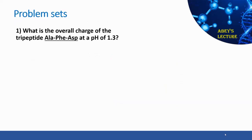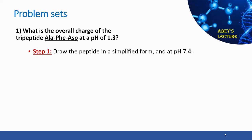Let's do an example question: what is the overall charge of the tripeptide alanine, phenylalanine, and aspartic acid at a pH of 1.3? I will show you how to solve this in a simplified way. The first step is to draw the peptide in a simplified form at pH 7.4.